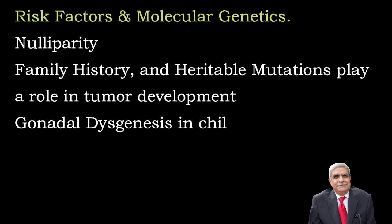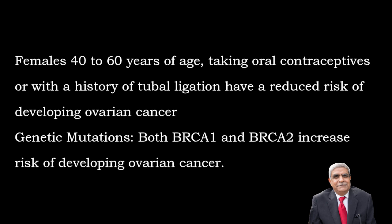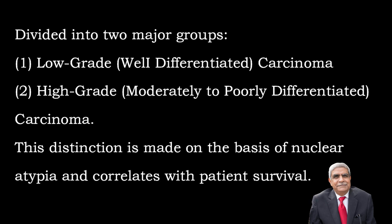Risk factors and molecular genetics: nulliparity, family history, and heritable mutations all play a part in tumor development. Gonadal dysgenesis in children is associated with a high risk of developing ovarian carcinoma. Females aged 40 to 60 taking oral contraceptives or undergoing tubal ligation have a reduced risk. Mutations in both BRCA1 and BRCA2 increase risk of ovarian carcinoma. Ovarian tumors are divided into two grades: low grade (well-differentiated) and high grade (moderately to poorly differentiated), distinguished by nuclear atypia, which correlates with patient survival.